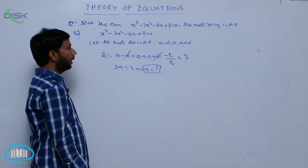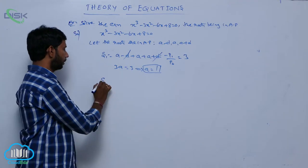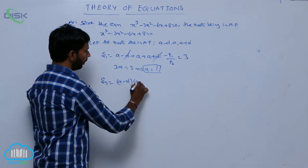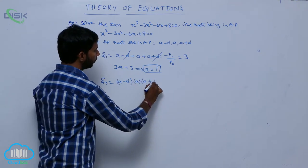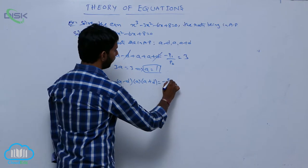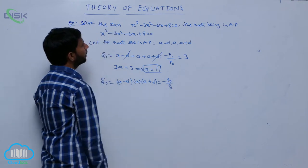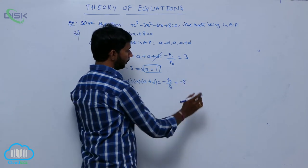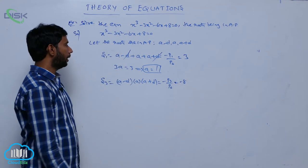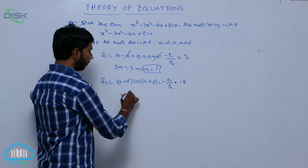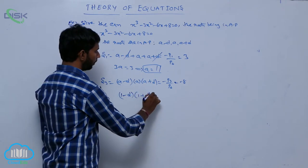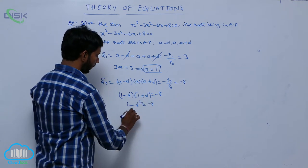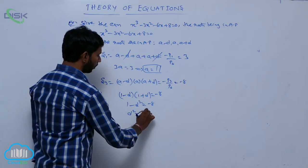We get the value of A. Next we go to S3. S3 means product of roots, that is A minus D times A times A plus D, equal to minus p3 by p0. It is equal to minus 8. Here A is equal to 1, so 1 minus D times 1 times 1 plus D equals minus 8. So 1 minus D square equals minus 8.